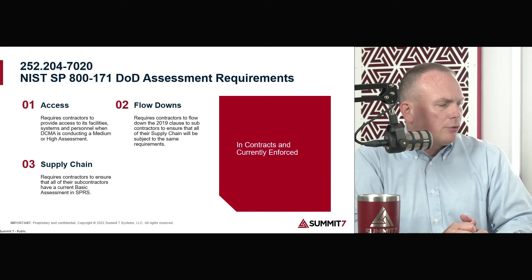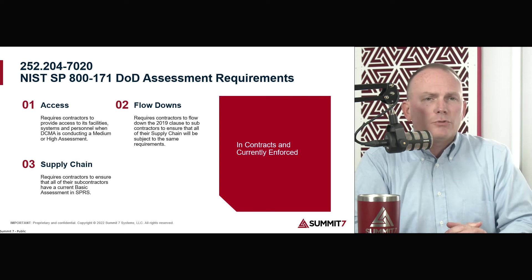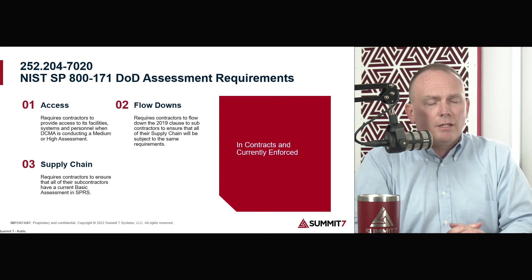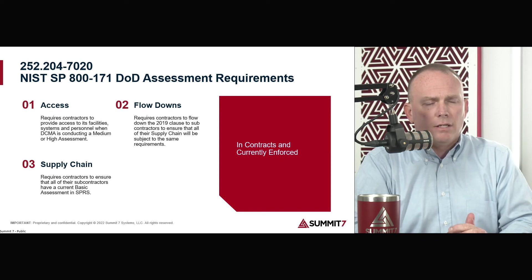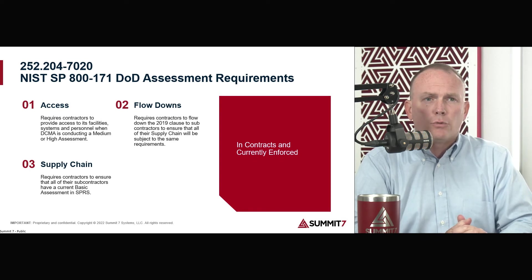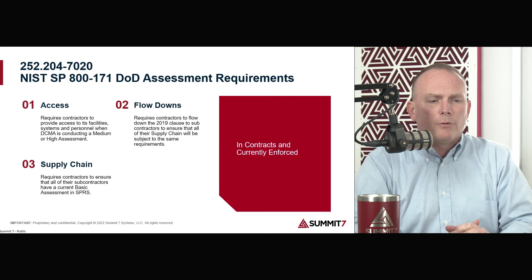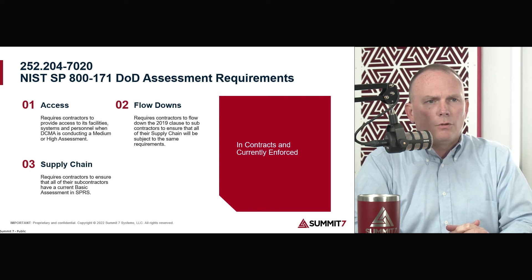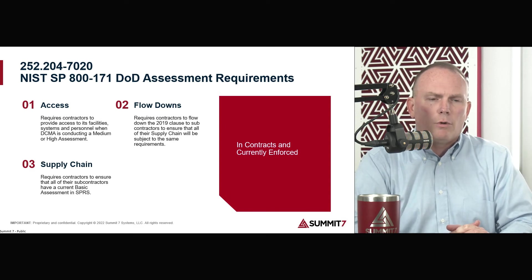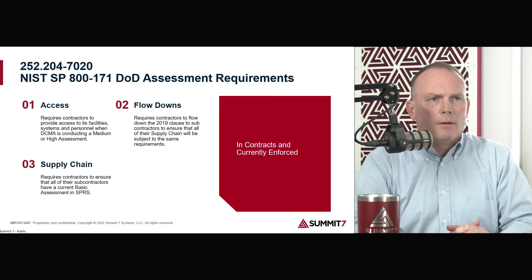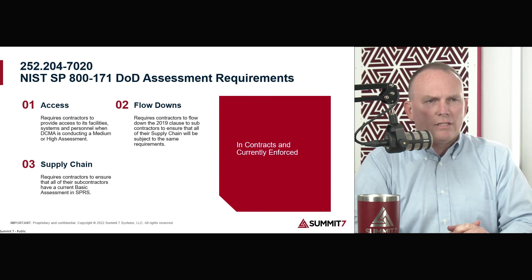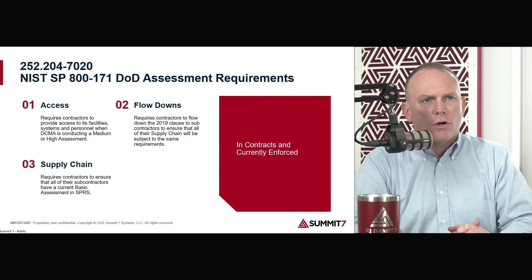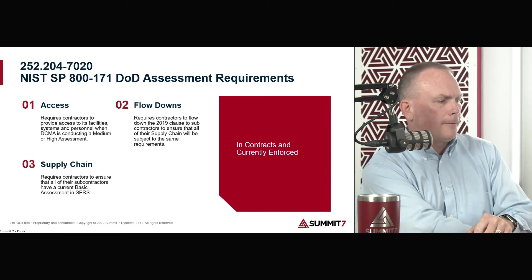When should companies be compliant with the 110 controls? Companies were supposed to be compliant with the 110 controls on December 31st, 2017 — the date that DFARS 7012 went into effect. There was a period where the government said you just need an SSP and a POAM and they'd check you off as long as you're making progress. But given that was five years ago, at this point all companies with a DFARS 7012 clause should have all 110 controls in place and compliant.